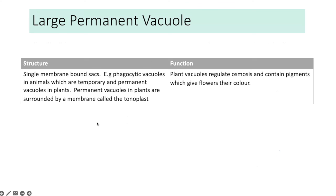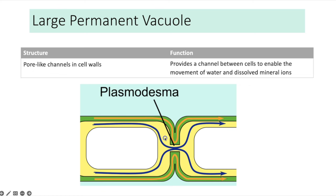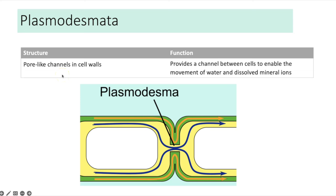Plant cells also have a large permanent vacuole — a single membrane-bound sac surrounded by a membrane called the tonoplast. Its function is to regulate osmosis and to contain the pigments that give flowers their colour to attract pollinators. The plasmodesmata are pore-like channels within the cell wall that provide a channel between cells to enable movement of water and dissolved mineral ions between adjacent cells.